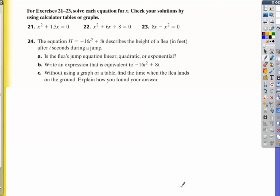You'll remember from our previous work that negative 16 represents the force of gravity working in a negative direction down. This 8 represents the flea's initial velocity leaving the ground, so he's moving at 8 feet per second when he leaves the ground, and gravity forces him down.